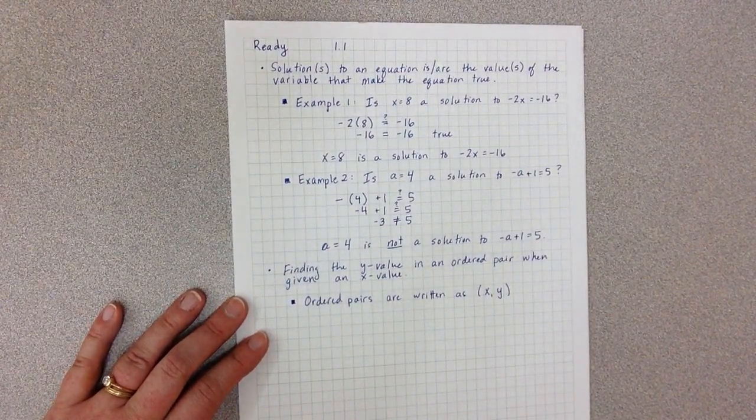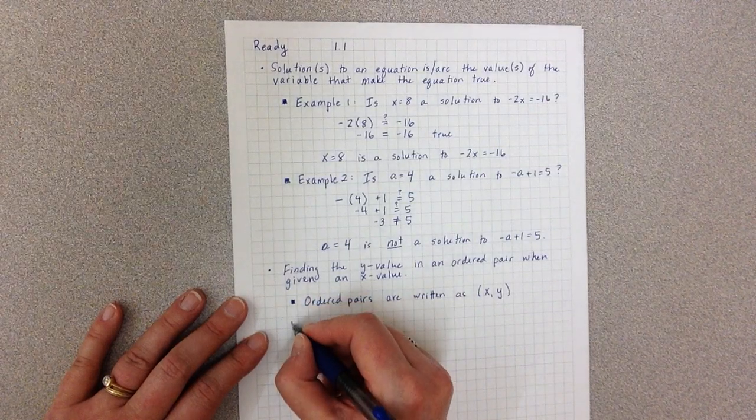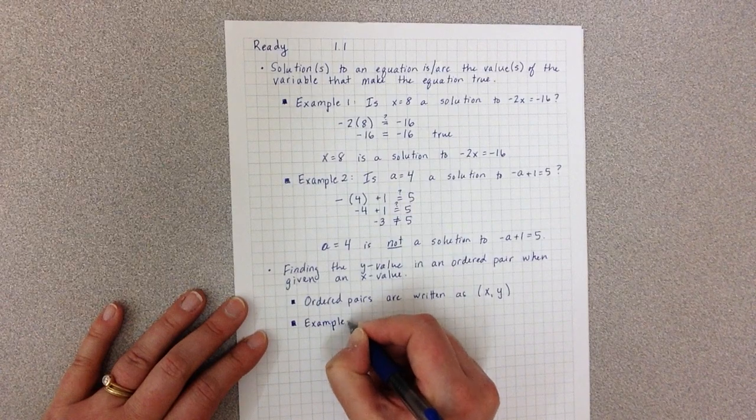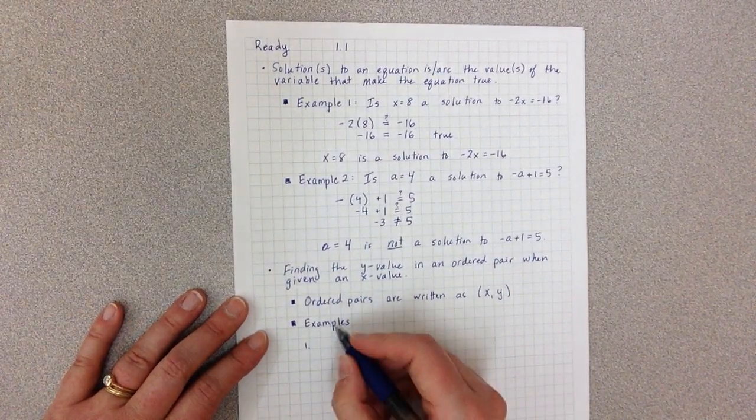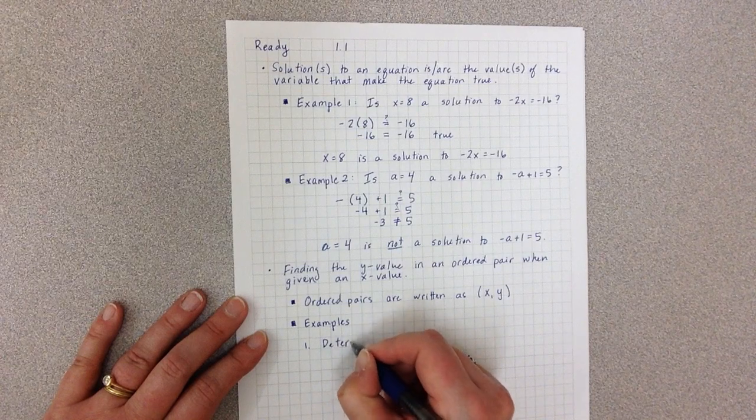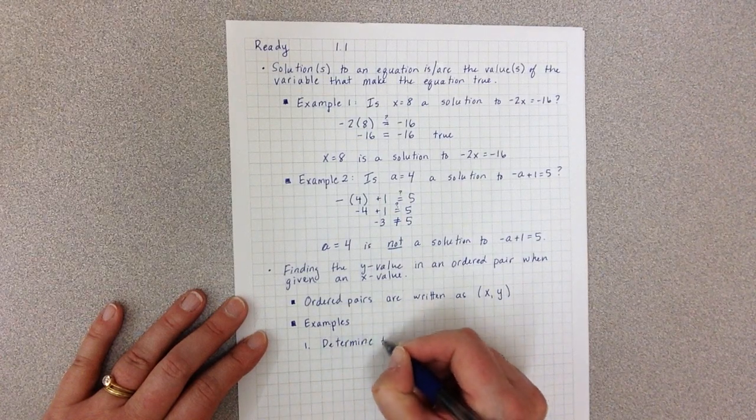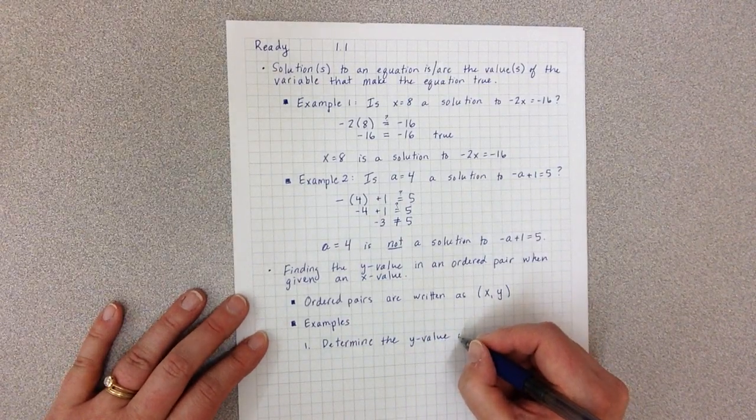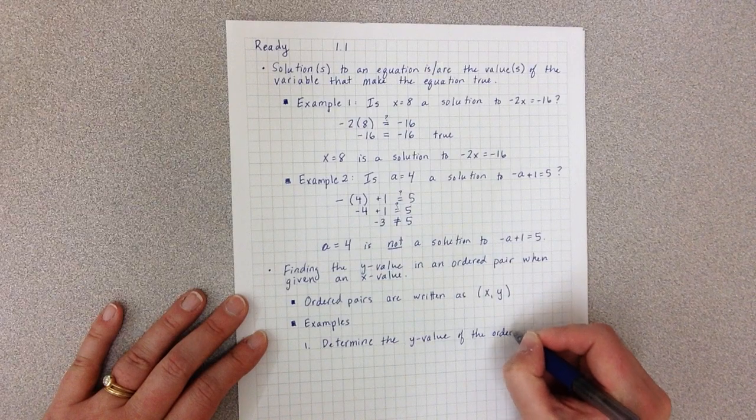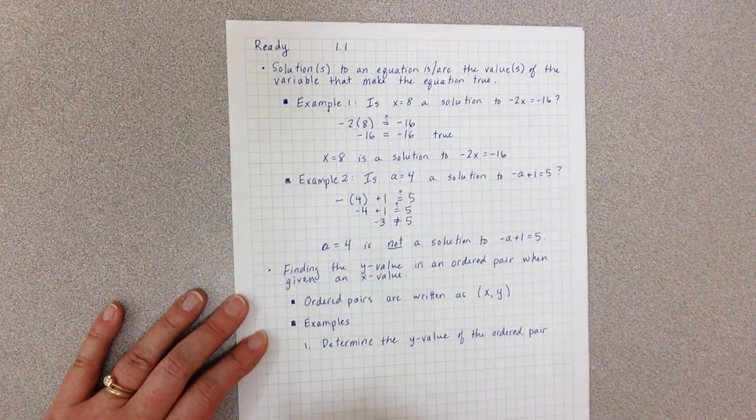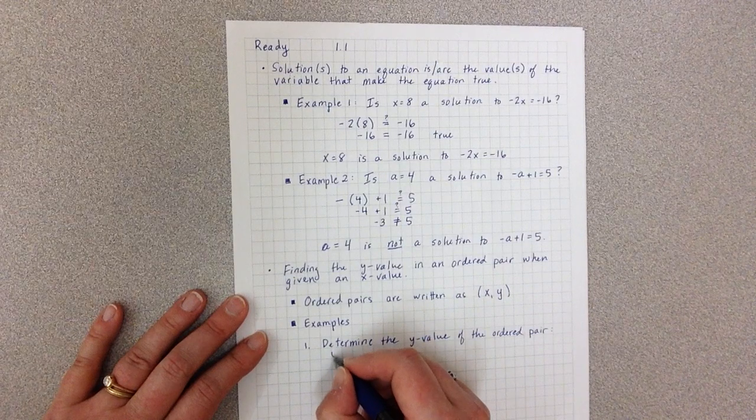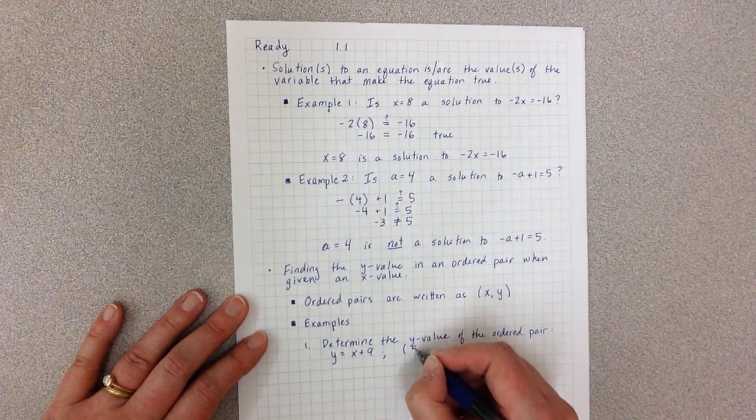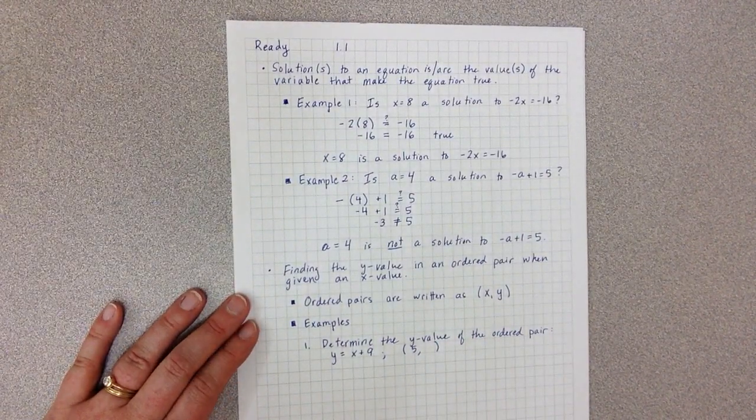And then we should do a few examples. So examples. One, determine the y value of the ordered pair for the equation y equals x plus 9, and the point where x is 5.